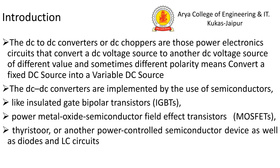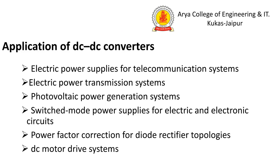DC to DC converters are implemented using semiconductor devices such as the Insulated Gate Bipolar Transistor (IGBT), MOSFETs, thyristors, and other power control semiconductor devices, along with diodes and inductive and capacitive circuits.